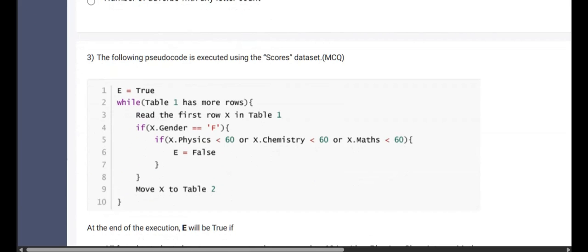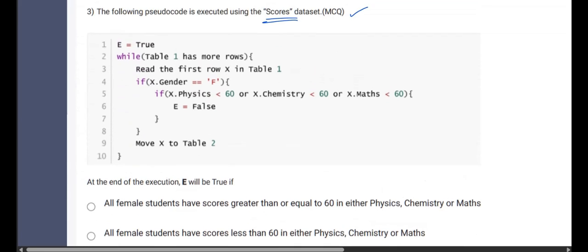Now come to third question. The following pseudocode is executed using scores dataset. Let us analyze what the pseudocode is. E is initiated, E is initialized with the Boolean value called true. And now coming to the fourth point, which is the classifying criteria. If the gender is female, that is if the card belongs to female, and apart from that, if the student got less than 60 in any of the one subjects. See, this is something like if one is true and the remaining are false, then this complete statement turns out to be true. So for that not to happen, let us see when E remains to be true.